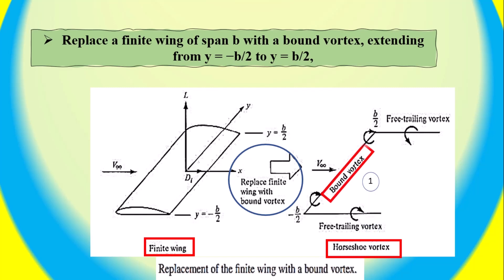This vortex — the bound vortex plus the two free trailing vortices — is in the shape of a horseshoe, and therefore is called a horseshoe vortex.